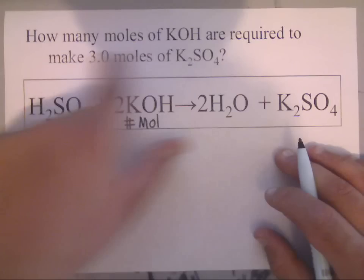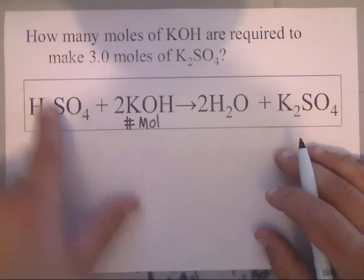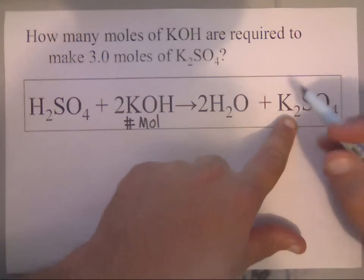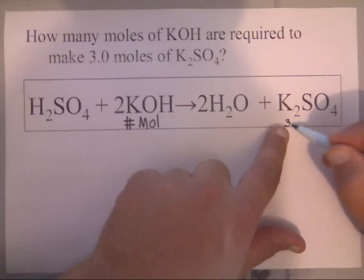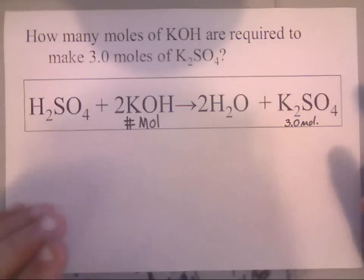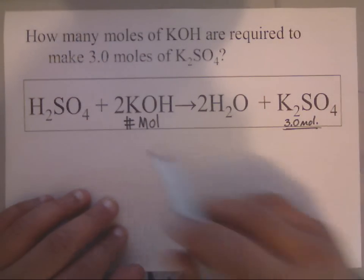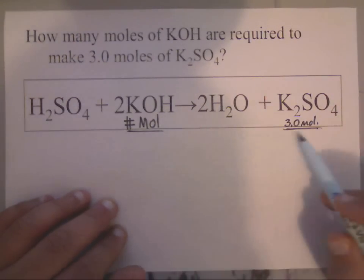Now, they state that how many moles of potassium hydroxide are required to make 3 moles of potassium sulfate. Here is potassium sulfate. They told us that we had 3.0 moles of potassium sulfate. So, in essence, this is my given.